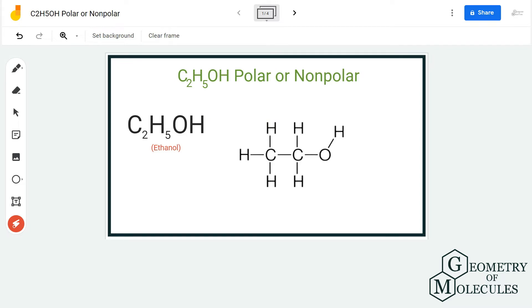So here is a Lewis structure of ethanol, and it has a chemical formula of C2H5OH. You can see here there are two carbon atoms which are forming bonds with four hydrogen atoms and a group of OH.